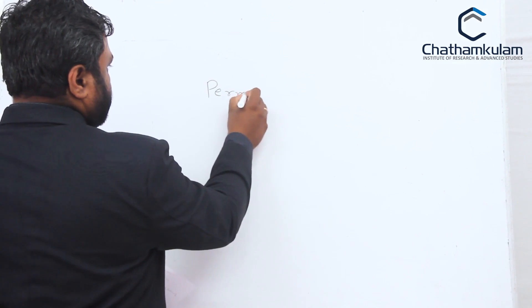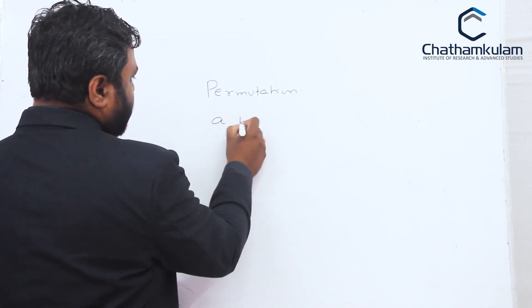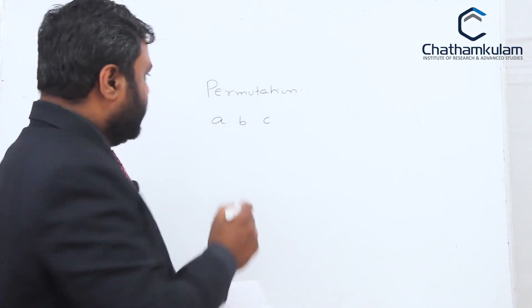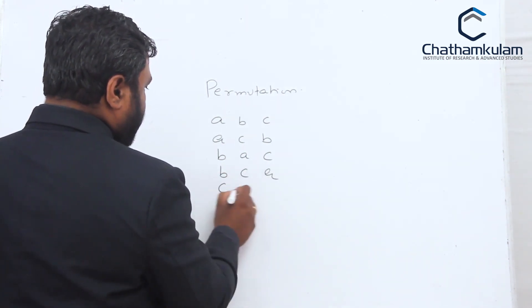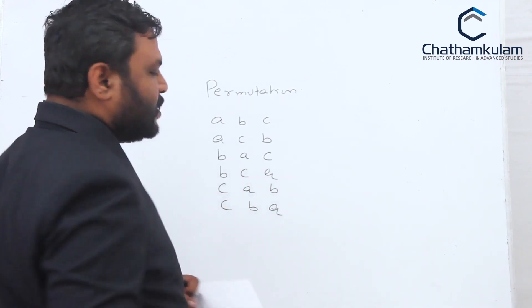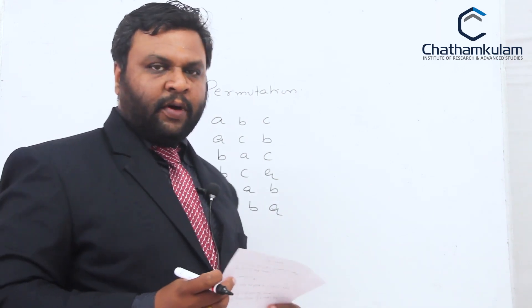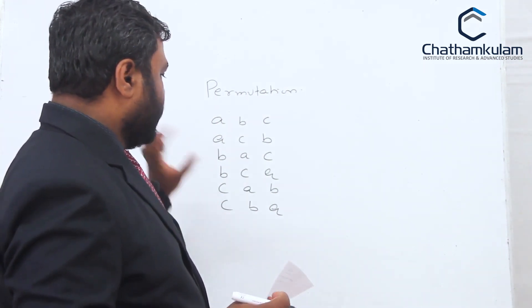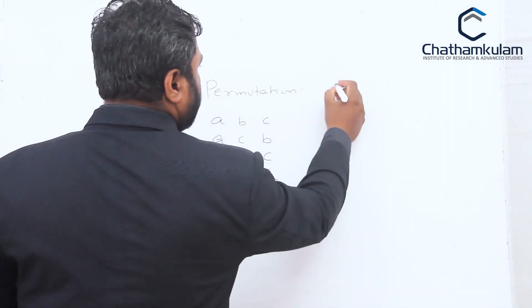Permutation means suppose if you are considering three letters A, B, and C — in how many ways can these three letters be arranged? The arrangements are: ABC, ACB, BAC, BCA, CAB, CBA. In permutation, ABC is not equal to ACB, not equal to BAC, not equal to BCA, not equal to CAB, not equal to CBA, because these are different types of arrangements.